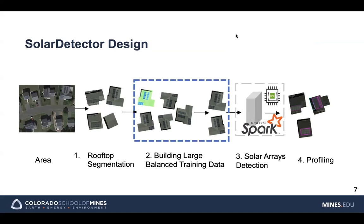To address these problems, we designed our Solar Detector. This is the pipeline of our system. In a given geospatial region, we first do rooftop segmentation to remove the background — roads, cars, or trees — so we can focus on the rooftops. Then we build large balanced training data using data augmentation techniques and DC-GANs to generate more images. We then use our solar array detection model to detect solar arrays, and after that we can further profile the information of solar arrays and other objects on the rooftops.